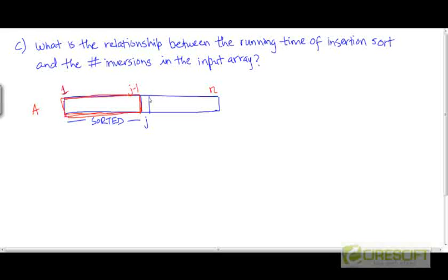Let's focus on how insertion sort works assuming that there is already a sorted portion. A few elements have already been sorted and we are at the stage where we are trying to insert the jth element into the sorted portion. We want to see if there is any relationship between the operations that insertion sort is doing and the existence of inversions in the array.